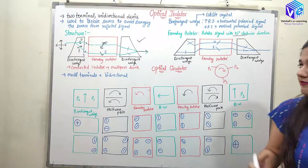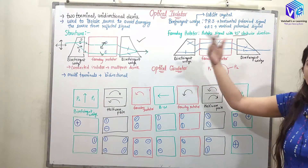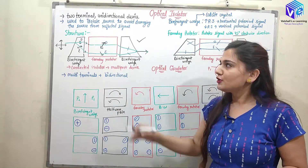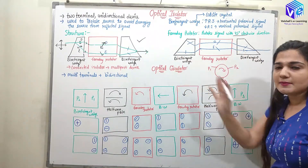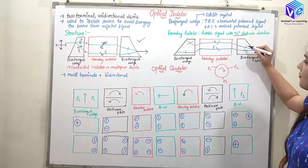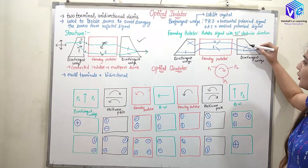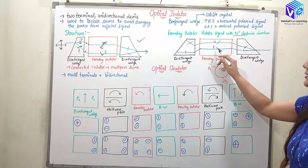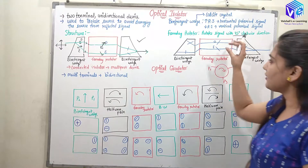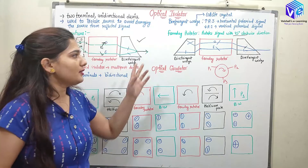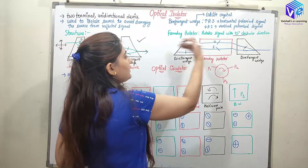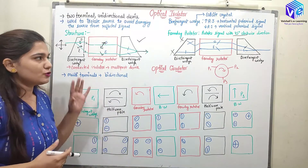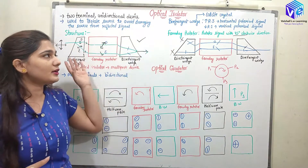Now considering the reverse operation: if we have a reflected wave trying to move back, will it pass through? From the working of the isolator, forward movement is possible but reverse movement is not. In the reverse direction, the birefringent wedge again gives the horizontal component a longer path. Then at the Faraday rotator, the signals rotate again. When they reach the birefringent wedge, they rotate in the opposite direction — they do not merge, and we cannot achieve the final output. So the reflected signal is blocked. This is the working of the optical isolator.